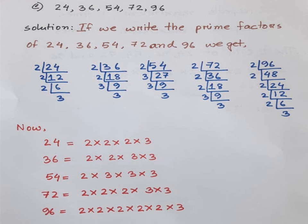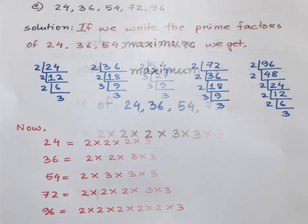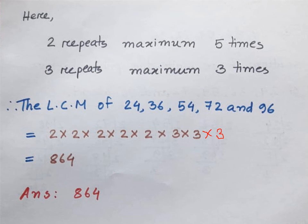Checking the maximum occurrence of 3: the first number's line has one 3, the second line has two 3s, the third line has three 3s, the fourth line has two 3s, and the fifth line has one 3. So 3 appears at most three times. Therefore: 2 repeats maximum 5 times, 3 repeats maximum 3 times. The LCM of 24, 36, 54, 72, and 96 is equal to 2 × 2 × 2 × 2 × 2 × 3 × 3 × 3.